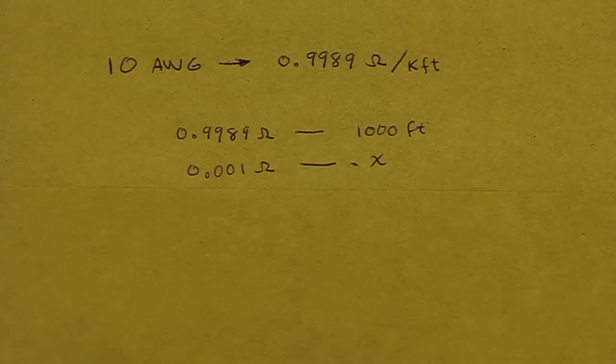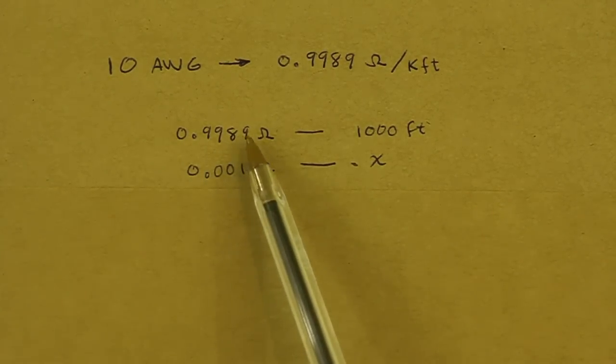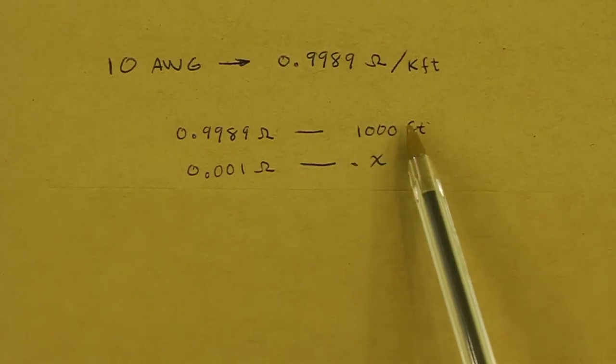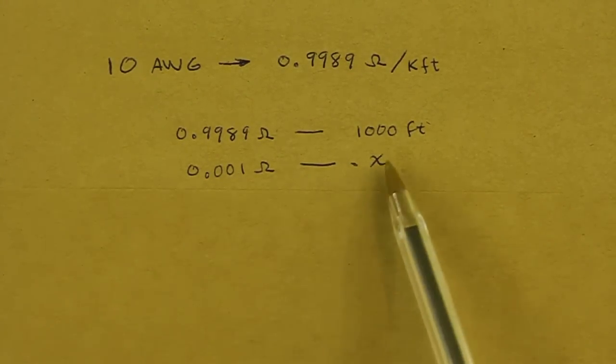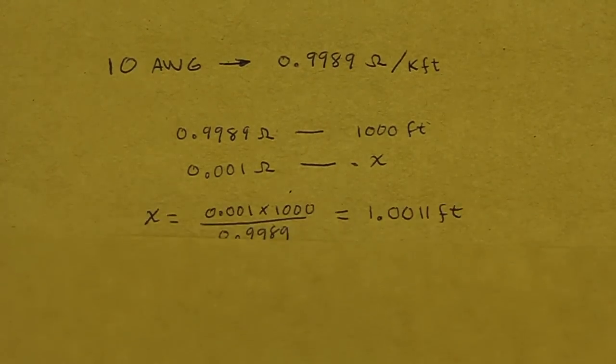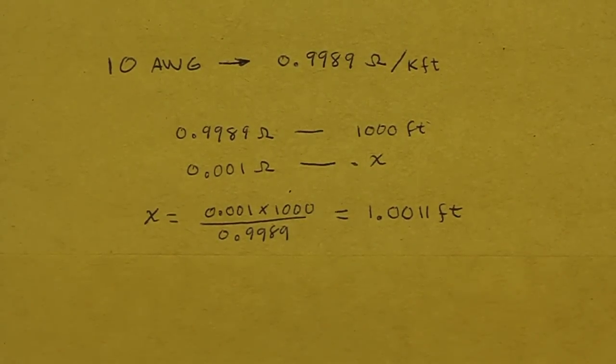We know that 0.9989 ohms corresponds to 1,000 feet. Therefore 1/1000 of an ohm is an unknown value x. From here we obtain the value of x and the calculation gives roughly one foot of length of wire.